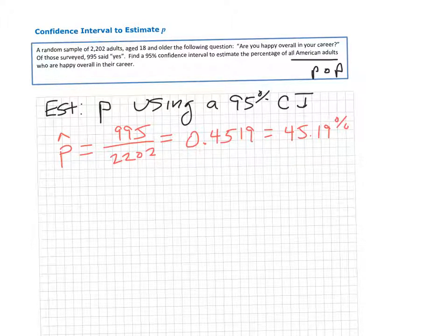The confidence interval always has two pieces. One is the point estimate, and the second is the margin of error that you add and subtract.